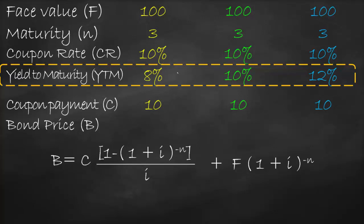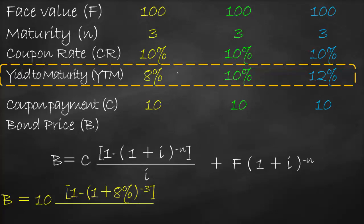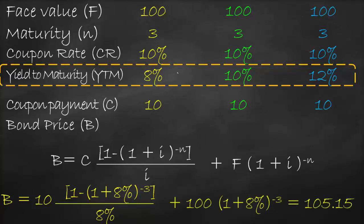Let's substitute for the first scenario. Our coupon is 10. So bond price = 10 × [1 − (1 + 8%)^(−3)] / 8% + 100 × (1 + 8%)^(−3). This gives us a bond price of 105.15.